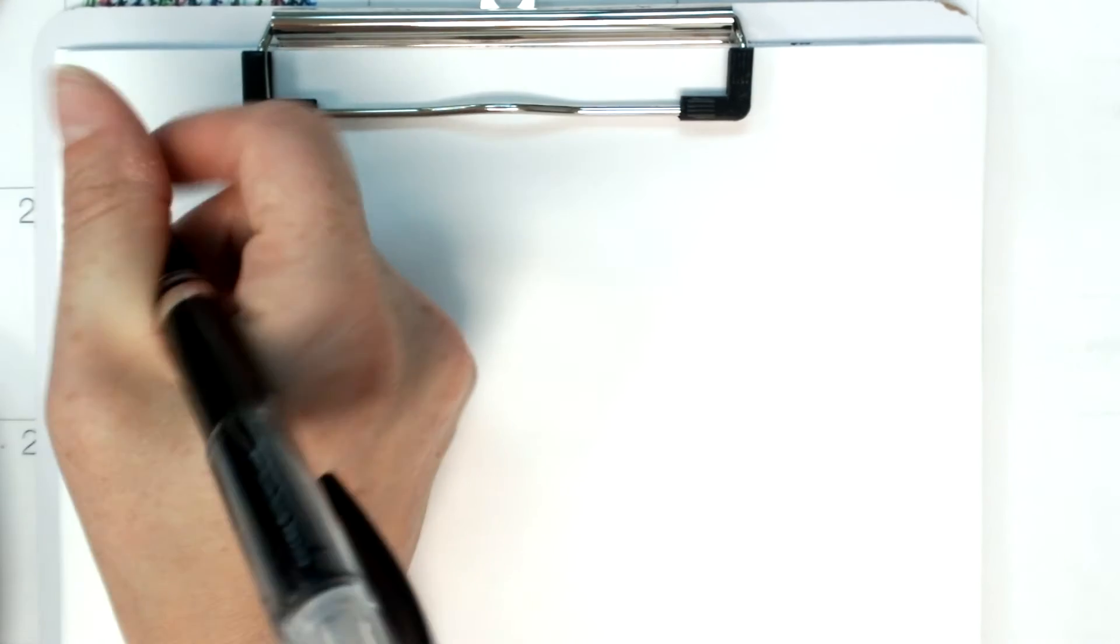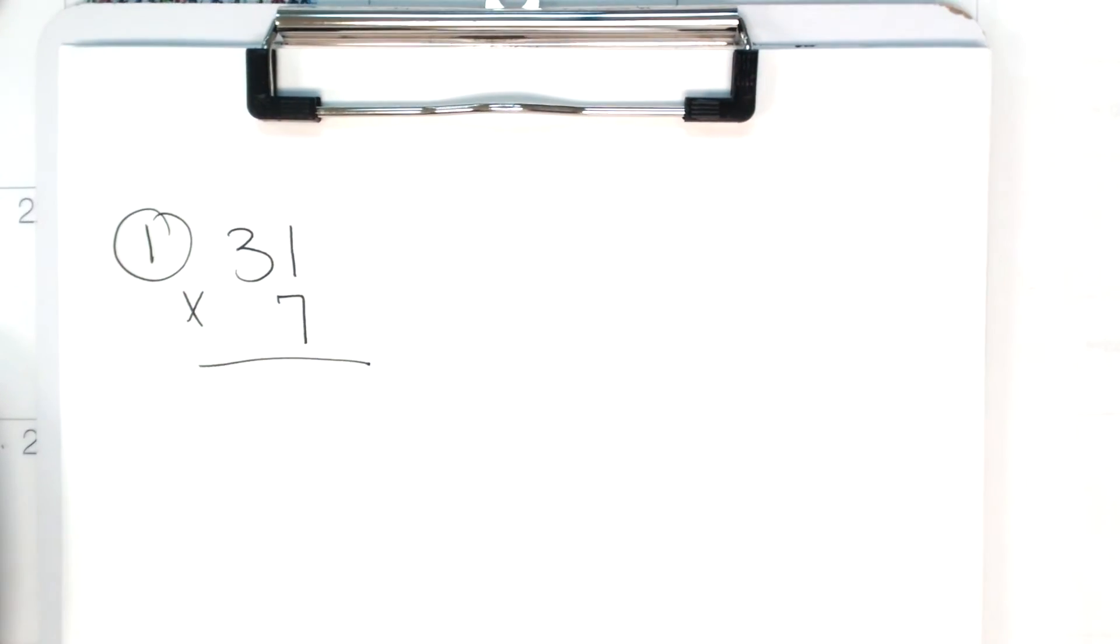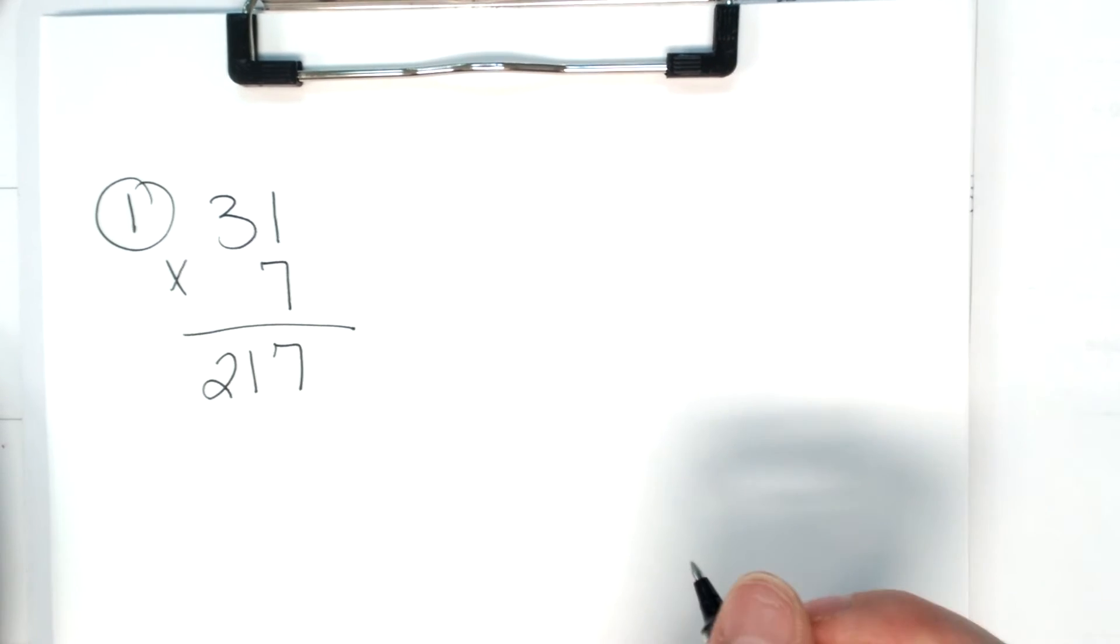And so here is my paper, number 1, 31 times 7. What is 7 times 1? 7, and 7 times 3 is 21. Simple enough.